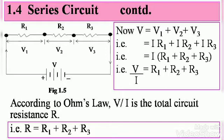According to Ohm's law, V over I is the total circuit resistance R. Then R equals R1 plus R2 plus R3 when you substitute that constant into the previous equation.